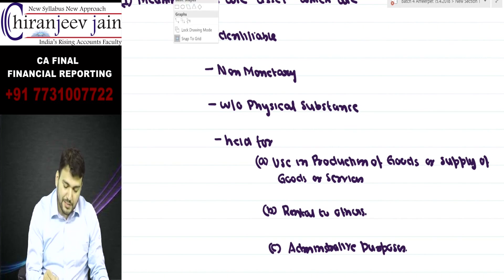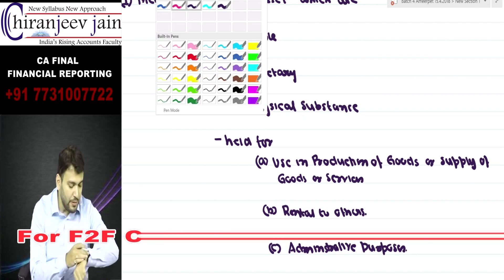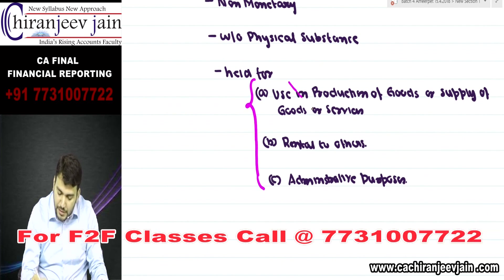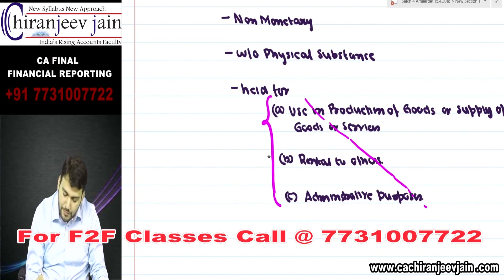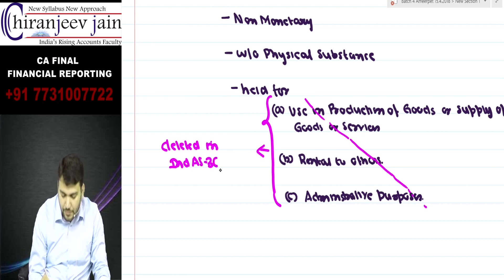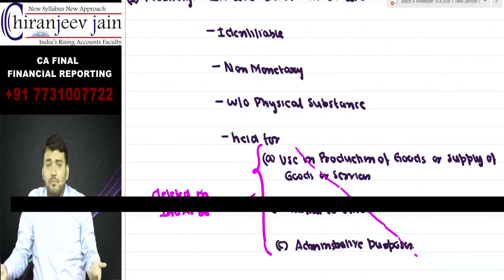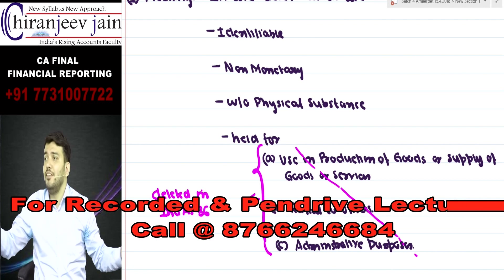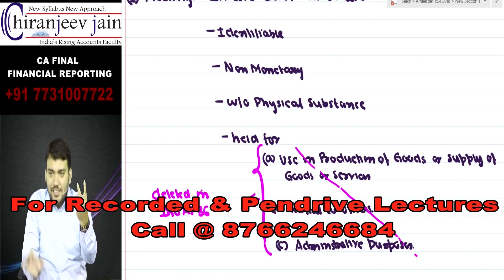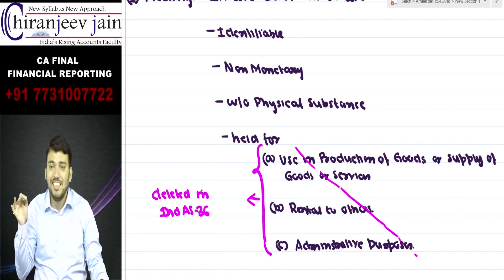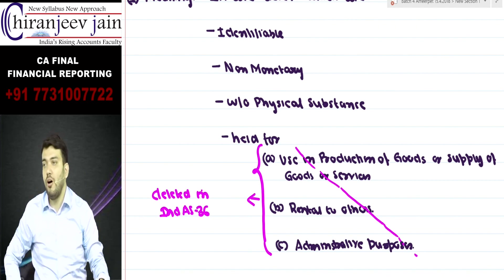Let us understand this meaning. Today we will do only the meaning and recognition part. Now, the part 'held for sale in the ordinary course of business' has been deleted in the definition under IND AS 36. So this becomes one difference in IND AS 36. However, this deletion will not make any difference because from the scope, IND AS 36 excludes intangible assets held for sale in the ordinary course of business.